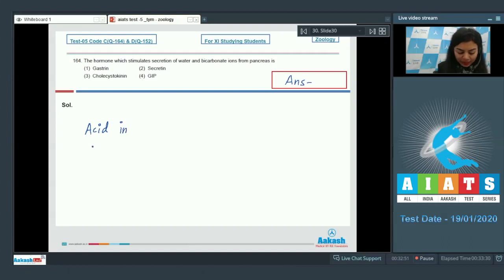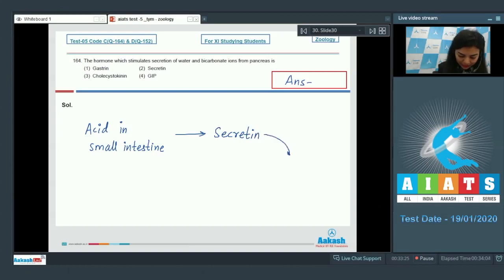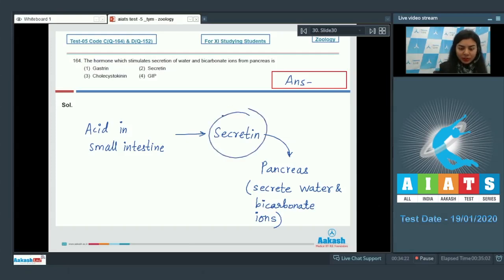When the acidic chyme enters the small intestine, the acid in the small intestine would result in the secretion of secretin, and this secretin would stimulate pancreas to secrete water and bicarbonate ions. These bicarbonate ions would provide the alkaline medium which is essential for the functioning of the upcoming enzymal activity.